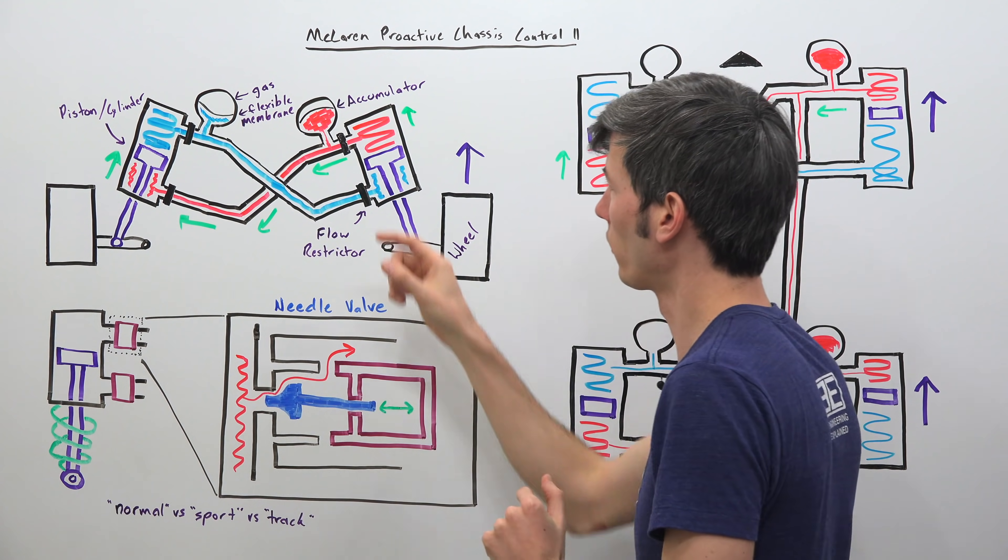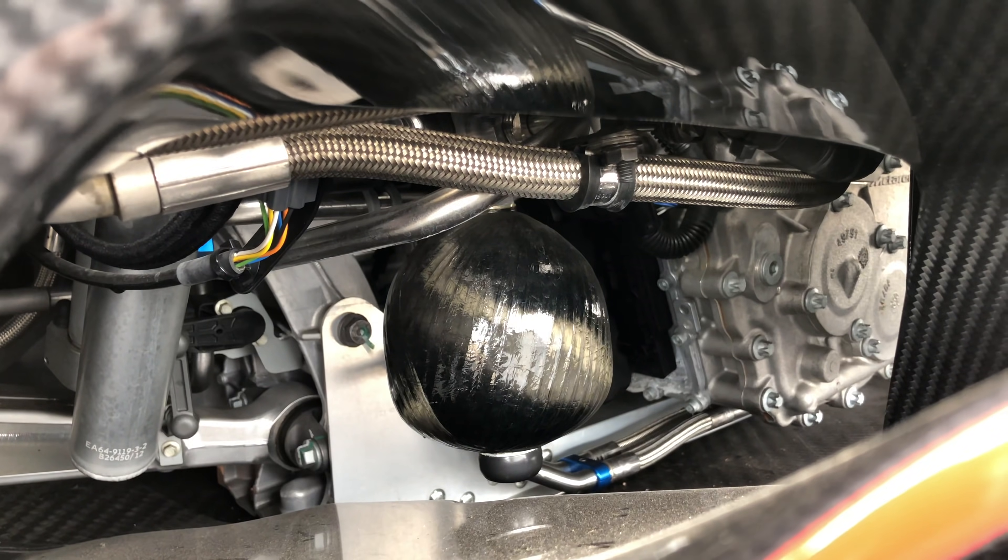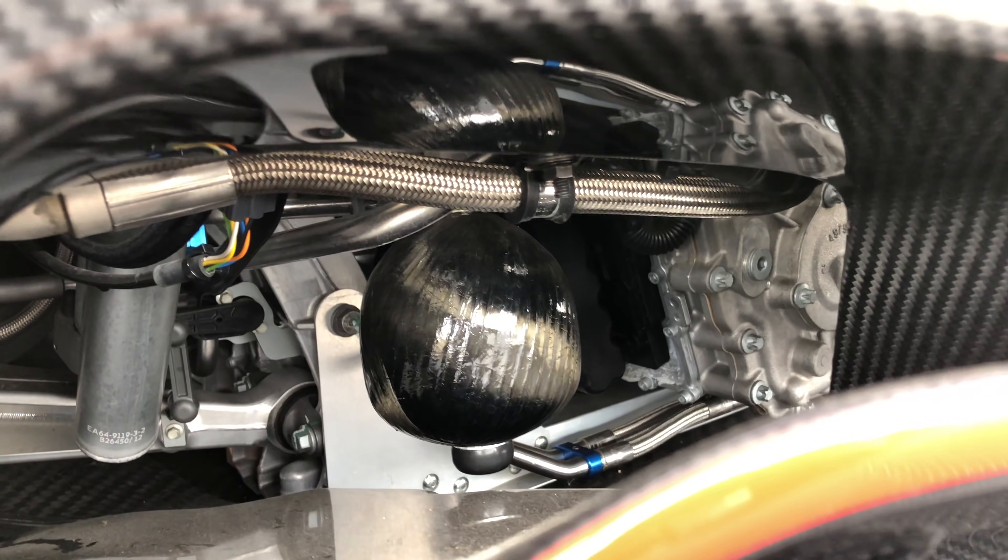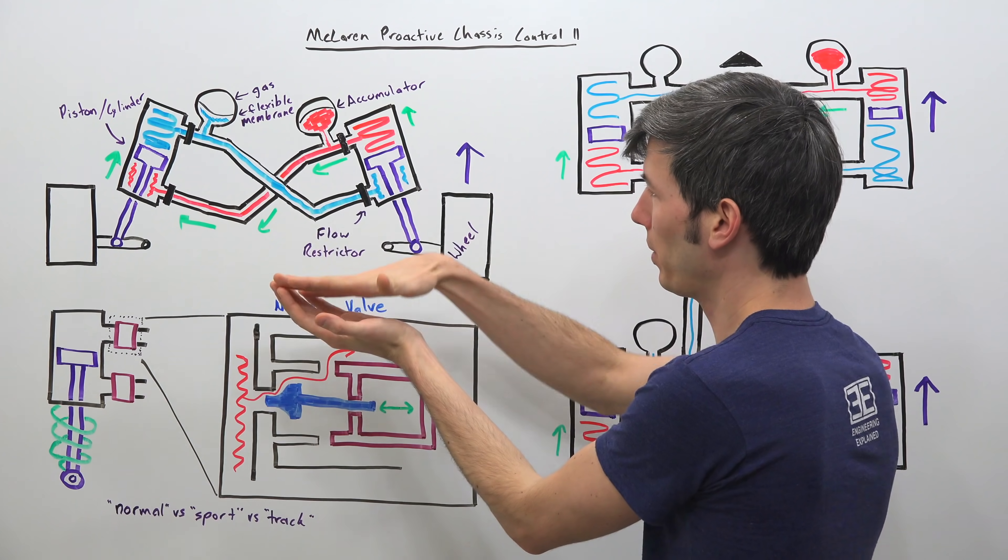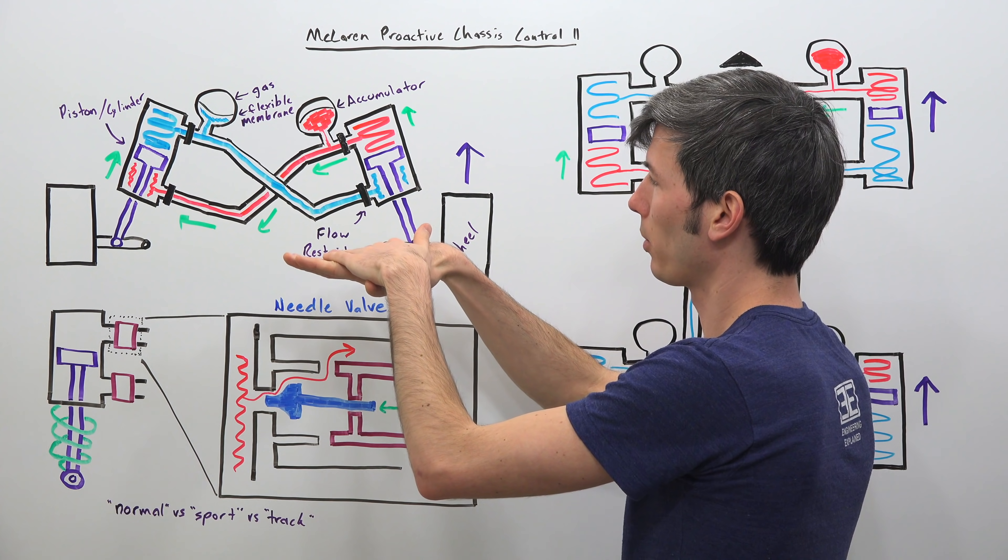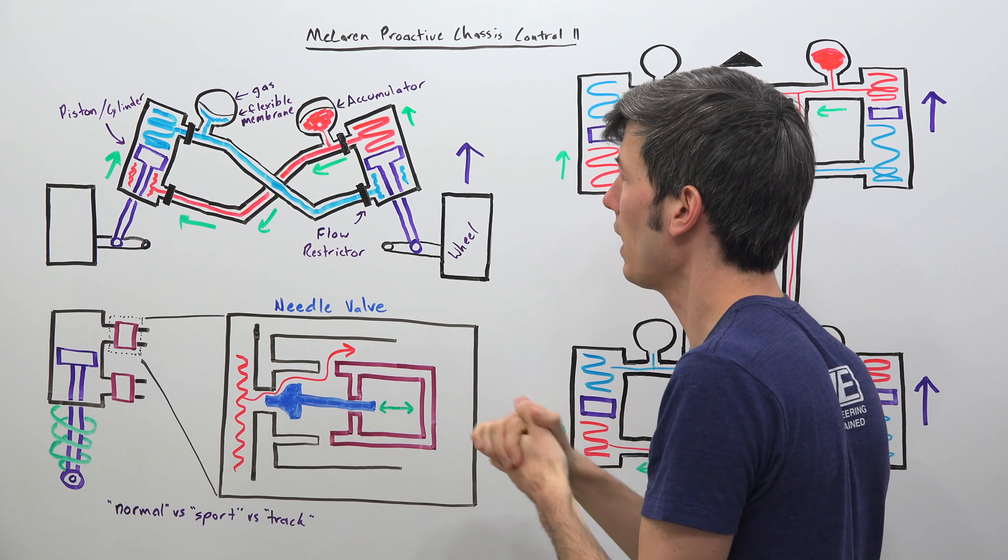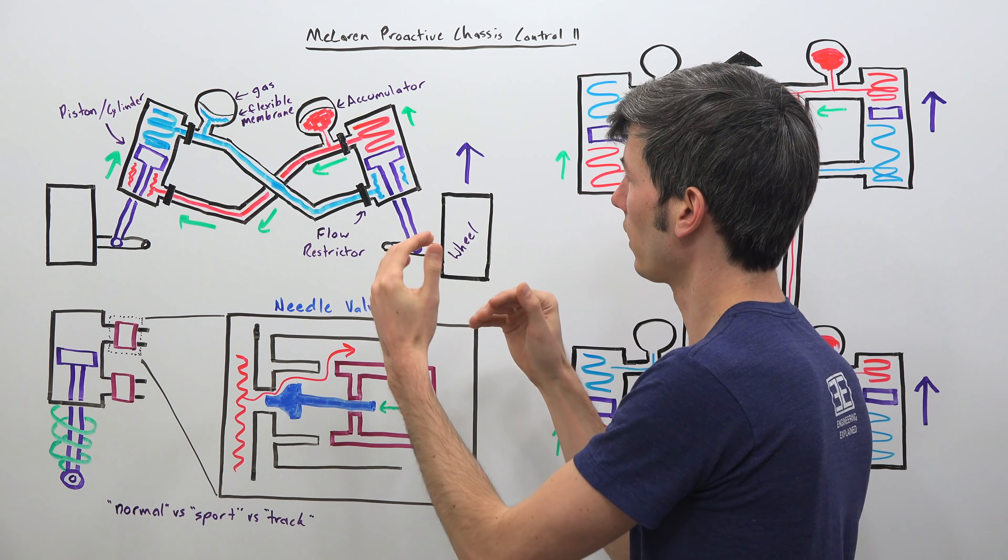And then you have these accumulators. So these accumulators are little spheres and that oil is allowed to flow within that accumulator and then there's a flexible membrane that can actually move up and down and above that flexible membrane is a gas. So gas of course can be compressed, a liquid cannot.